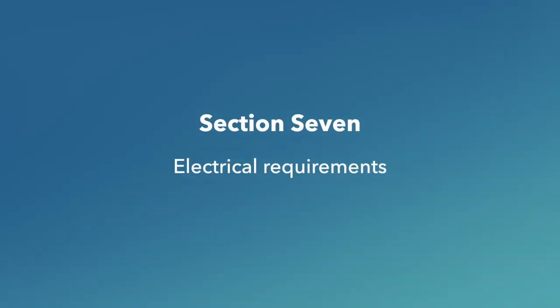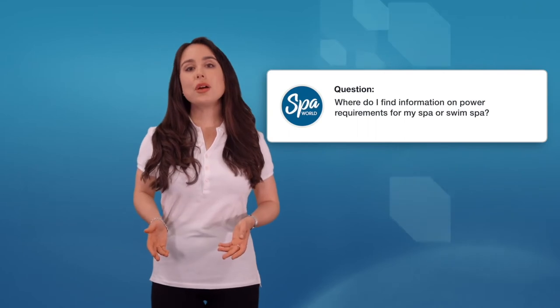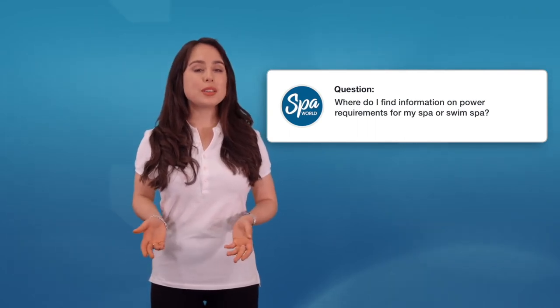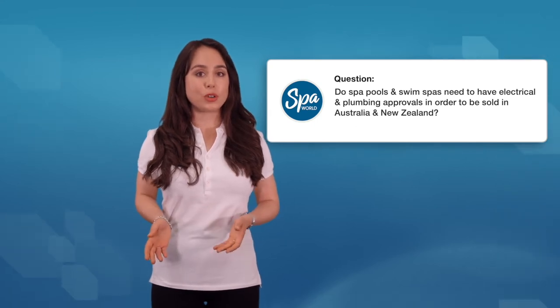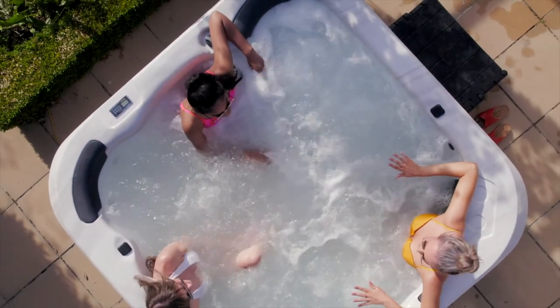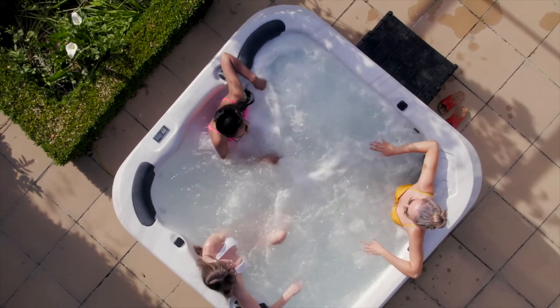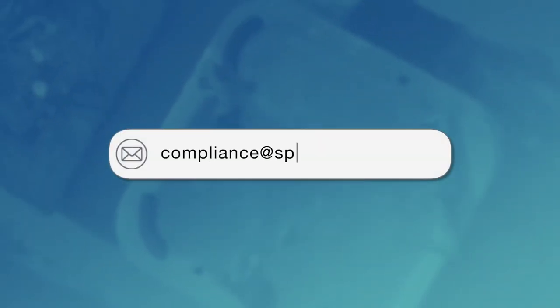Section 7, electrical requirements. Where do I find information on power requirements for my spa or swim spa? You will find all power requirement information on the text sheet that can be downloaded from the SpaWorld website. Do spas and swim spas need to have electrical and plumbing approvals in order to be sold in Australia and New Zealand? Yes, all spas need to have both certifications in place in order to be sold legally in Australia and New Zealand. Having an approved spa is vital to your family's safety. And if you would like further information, please contact compliance at spaworld.com.au.